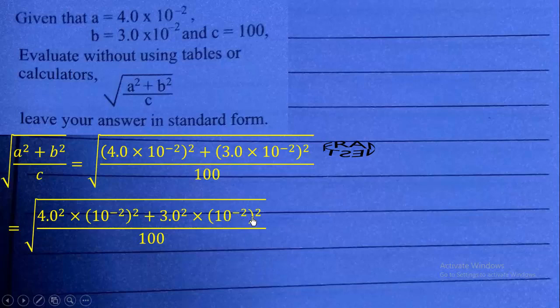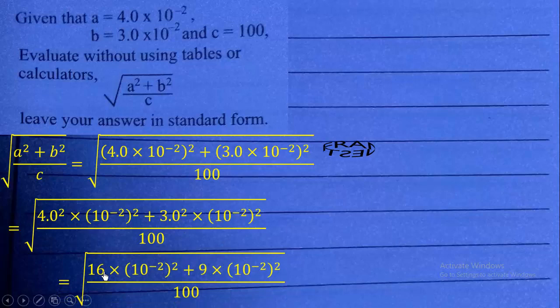Then times 10 exponent negative 2 squared. And 10 exponent negative 2 squared all over 100. Now, let's evaluate 4 squared and 3 squared. So, 4 squared will give us 16, and 3 squared will give us 9. Now, the next thing we are going to do is that we have 10 exponent negative 2 squared and 10 exponent negative 2 squared.